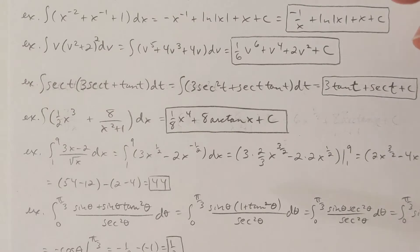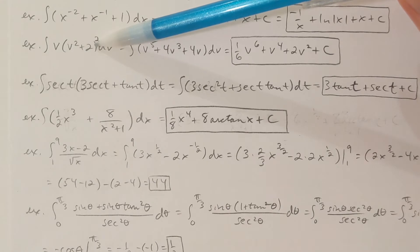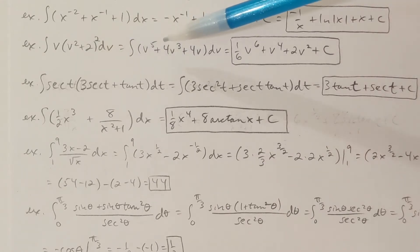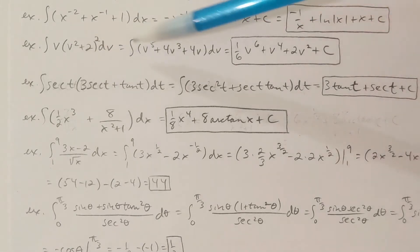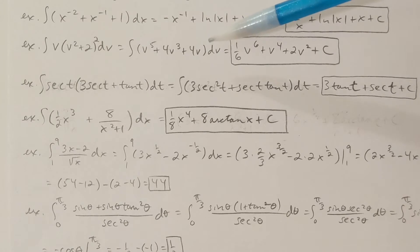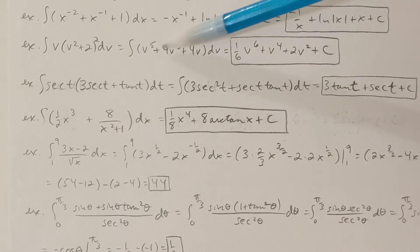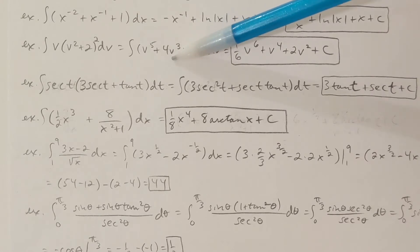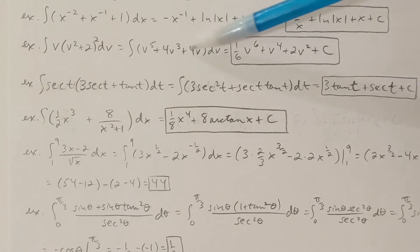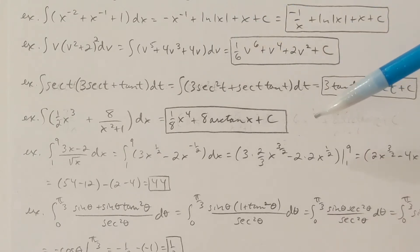Here's another example. Let's integrate v times the quantity v squared plus 2, squared, dv. I want to first simplify the integrand. I'll FOIL out v squared plus 2 times v squared plus 2, getting v to the 4th plus 4v squared plus 4. Distributing v gives v to the 5th plus 4v cubed plus 4v. Now the antiderivative of v to the 5th is v to the 6th over 6, plus 4v to the 4th over 4 — the 4 cancels leaving v to the 4th — plus antiderivative of 4v is 4v squared over 2, which is 2v squared, plus c.